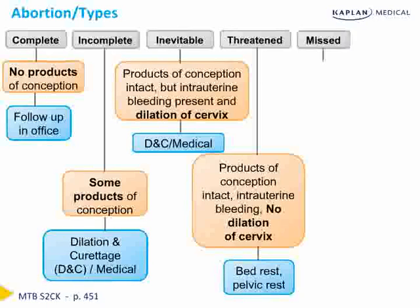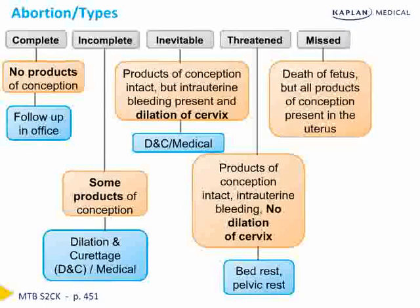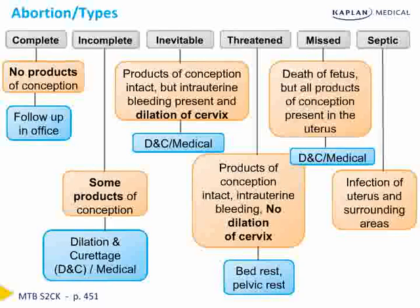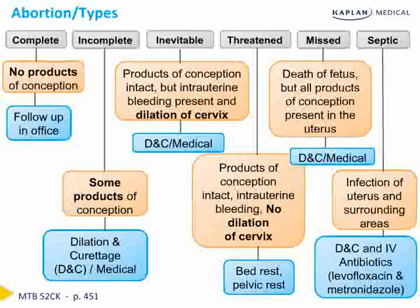With the missed abortion, there is death of the fetus, but all products of conception are present in the uterus and intact. In this case, we have the option of surgical management with a D&C or medical management. Finally, with the septic abortion, there is an infection in the uterus and the surrounding areas. Management typically involves a D&C and IV antibiotics such as levofloxacin and metronidazole.